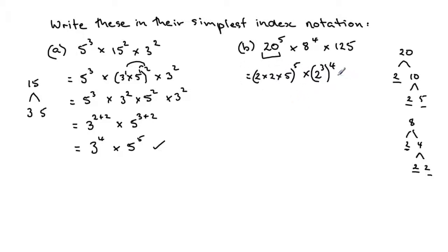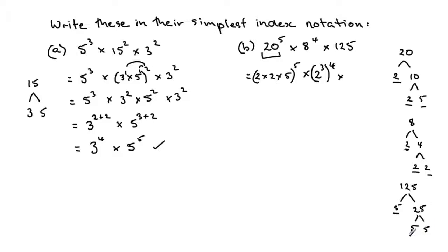Now let's look at 125. We know 2 can't go into 125, and 3 can't either, so we try 5. 5 into 125: 5 into 12 goes 2 remainder 2, and 5 into 25 goes 5. The factors of 25 are 5 and 5, so 125 is 5 times 5 times 5, which is 5 cubed.